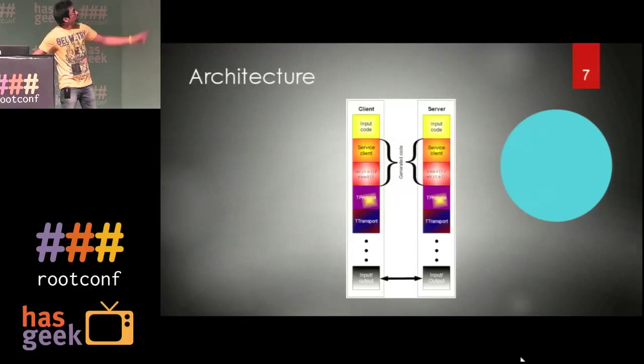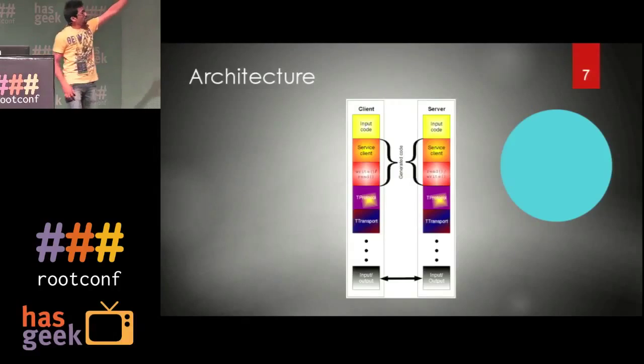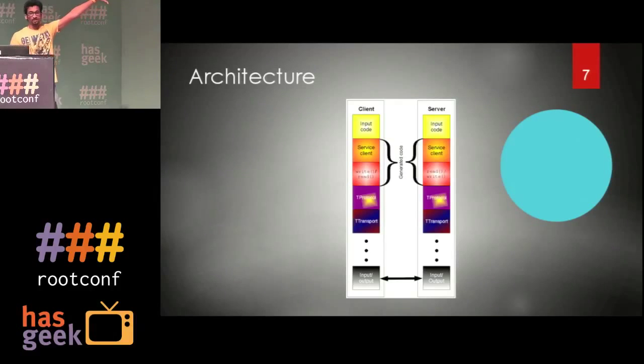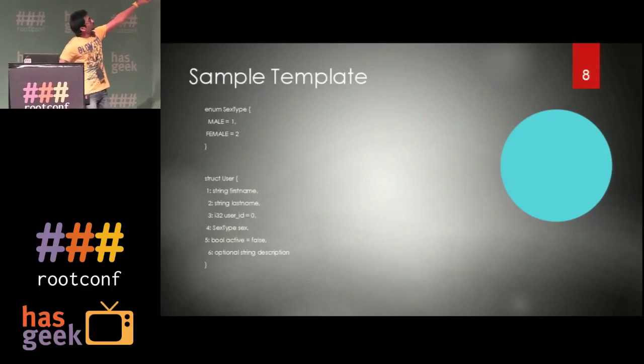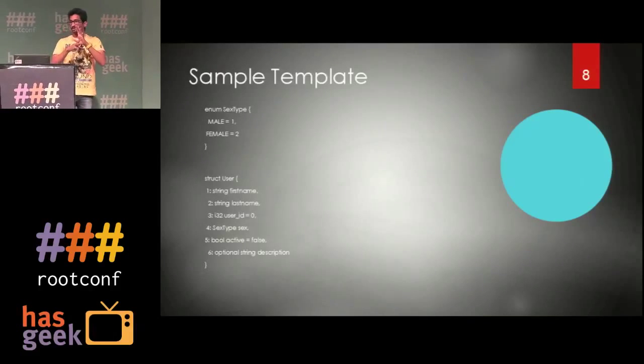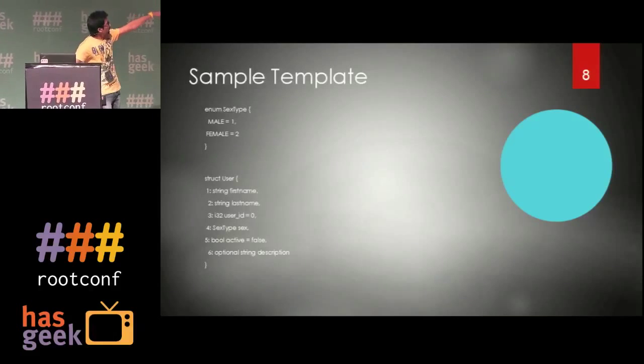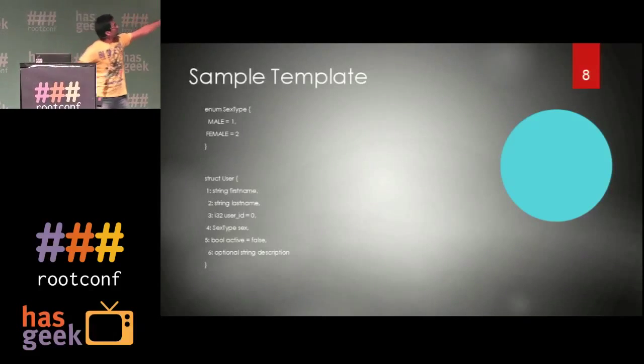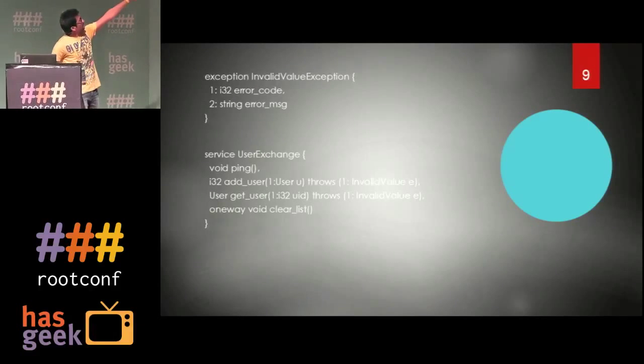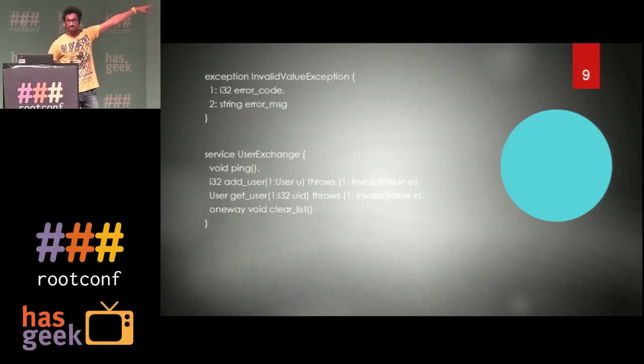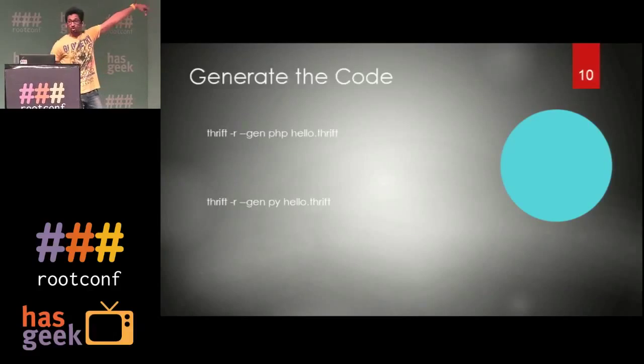This was the architecture: the client has one particular code, the server has one particular code. It generates a code, and that particular code on top of your two programming languages calls the definitions and then you run it. This is a sample template which I wrote in Apache Thrift. You have the functions, the variables, exceptions you can write, and the functions again. You generate the code like this.